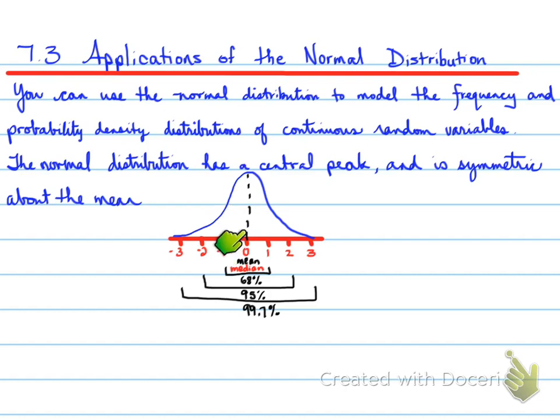Here's our mean, one standard deviation to the left, one standard deviation to the right. The mean and median are equal in a normal distribution. One standard deviation on either side of the mean covers roughly 68% of the data.